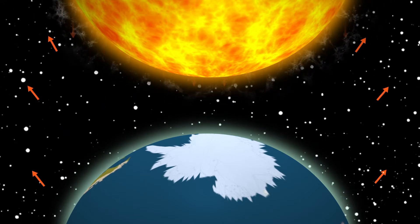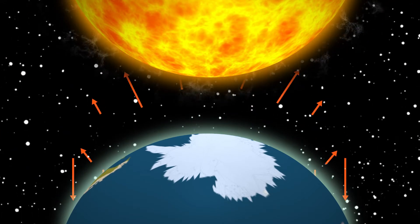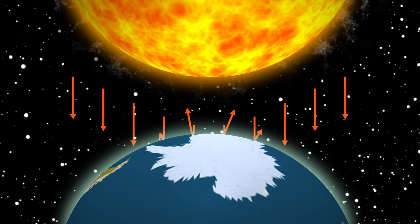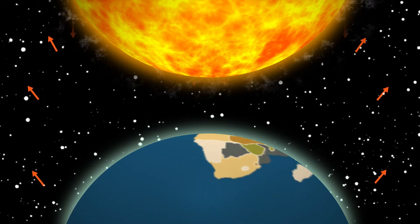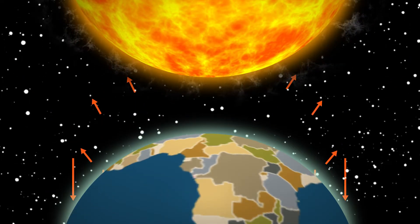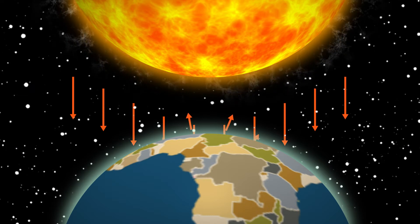Snow and ice have high albedo. Most of the sunlight hitting surfaces covered with snow and ice bounces back. In contrast, dark earthy surfaces have a low albedo, therefore they absorb more sunlight.